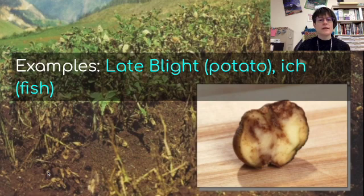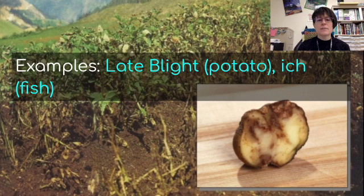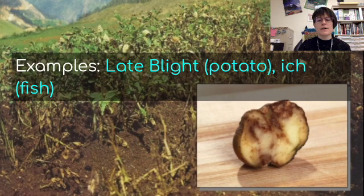Some examples are late blight potato, which affects potatoes and caused the potato famine in Ireland, leading to a lot of death and mass migration from that country, and ick, as shown on the fish in the previous picture. Those are destructive types of fungus-like protists that cause disease.